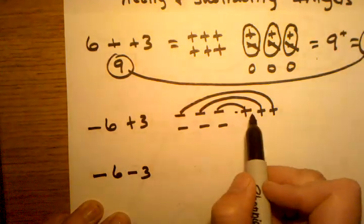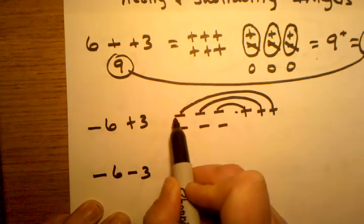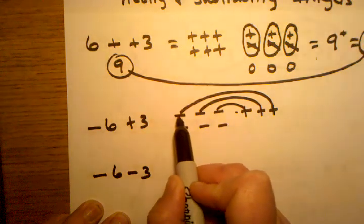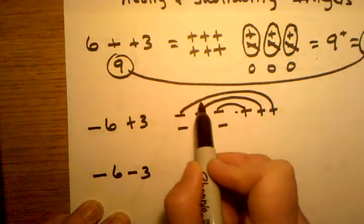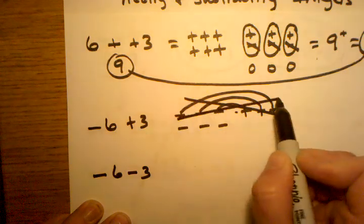So here I see that I can join my three positive signs with three negative signs. When I join them, they're all going to end up canceling each other out into zero pairs. So basically I can just ignore all of those up there.